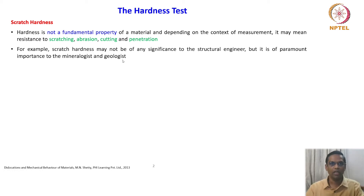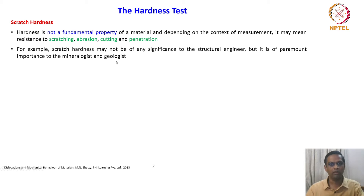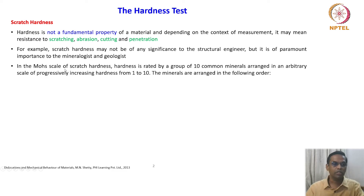A structural engineer will not get enough information about the material through scratch hardness, because for a structural engineer, strength and toughness are the primary important properties. On the other hand, mineralogists and geologists will find it very interesting data from scratch hardness. In the Mohs scale of scratch hardness, the hardness is rated by a group of 10 common minerals arranged in an arbitrary scale of progressively increasing hardness from 1 to 10.